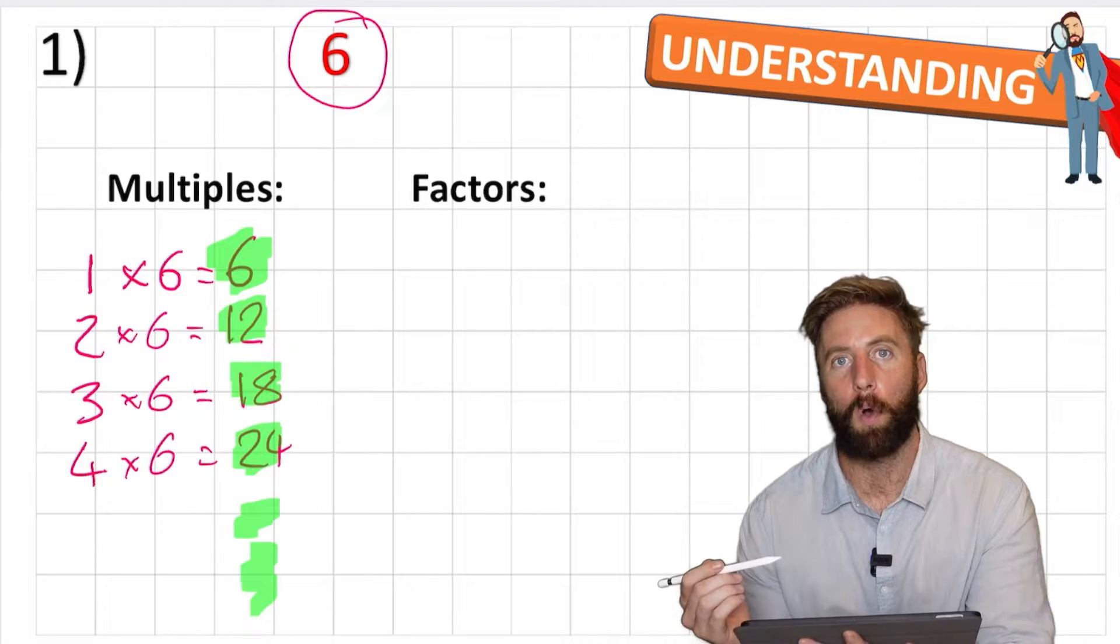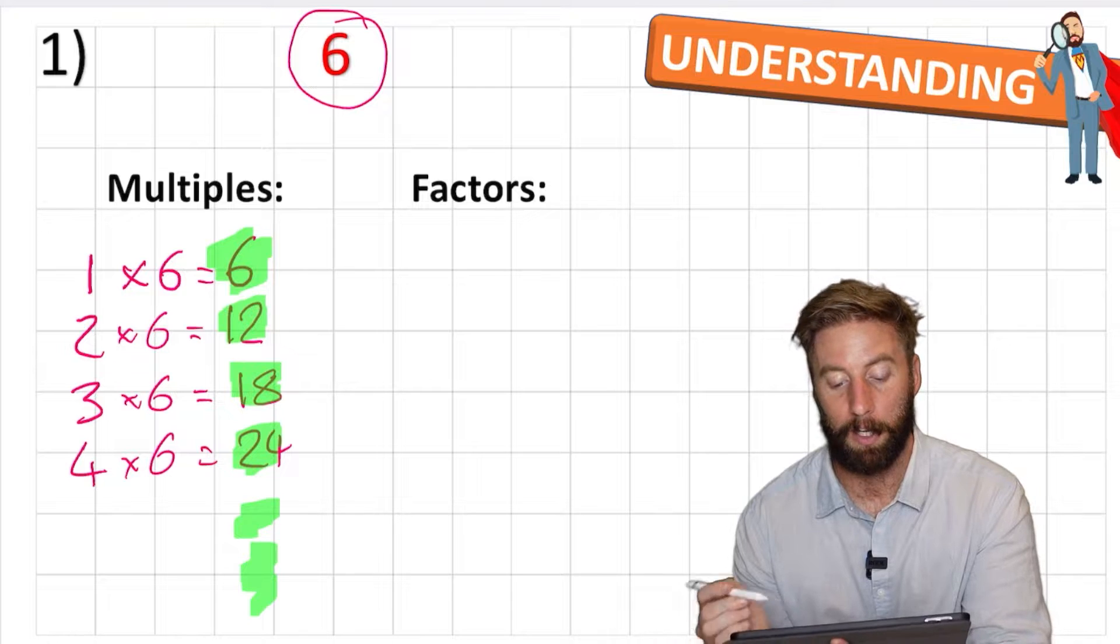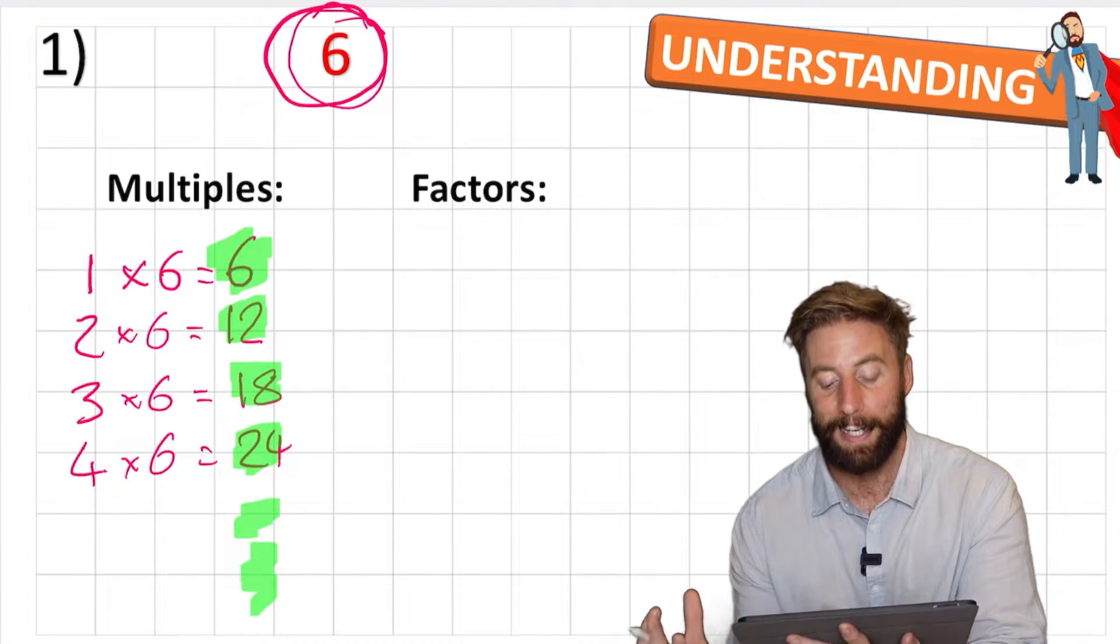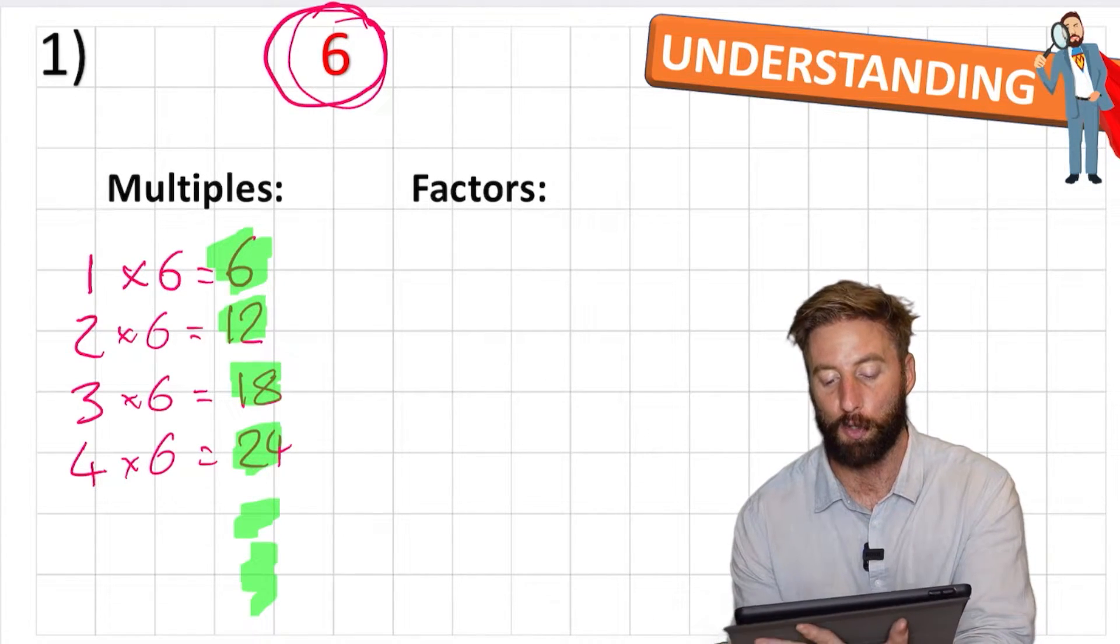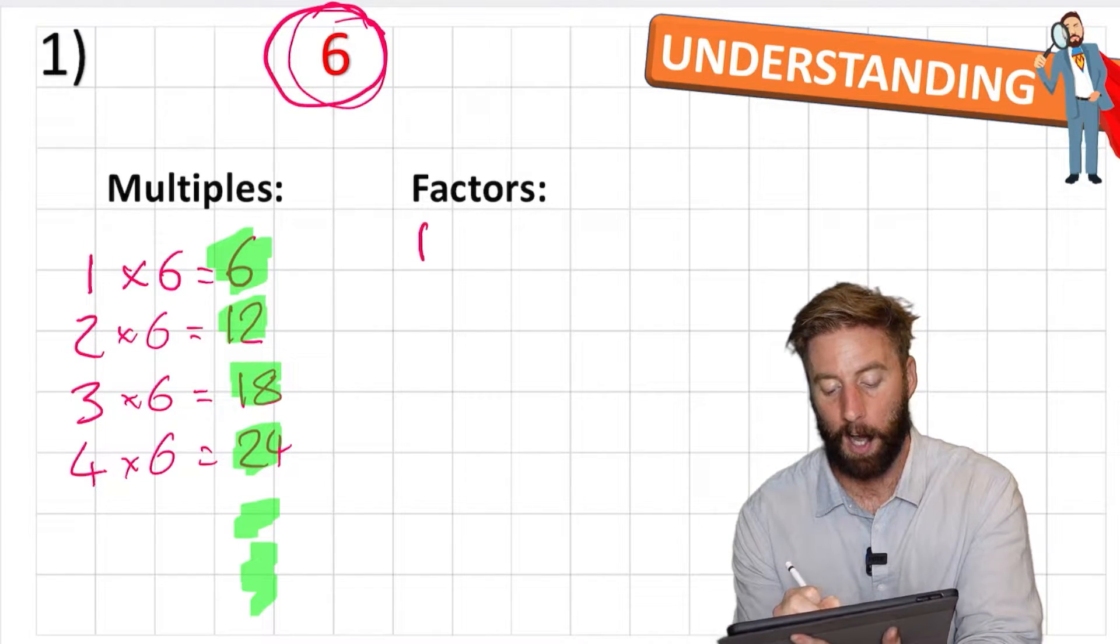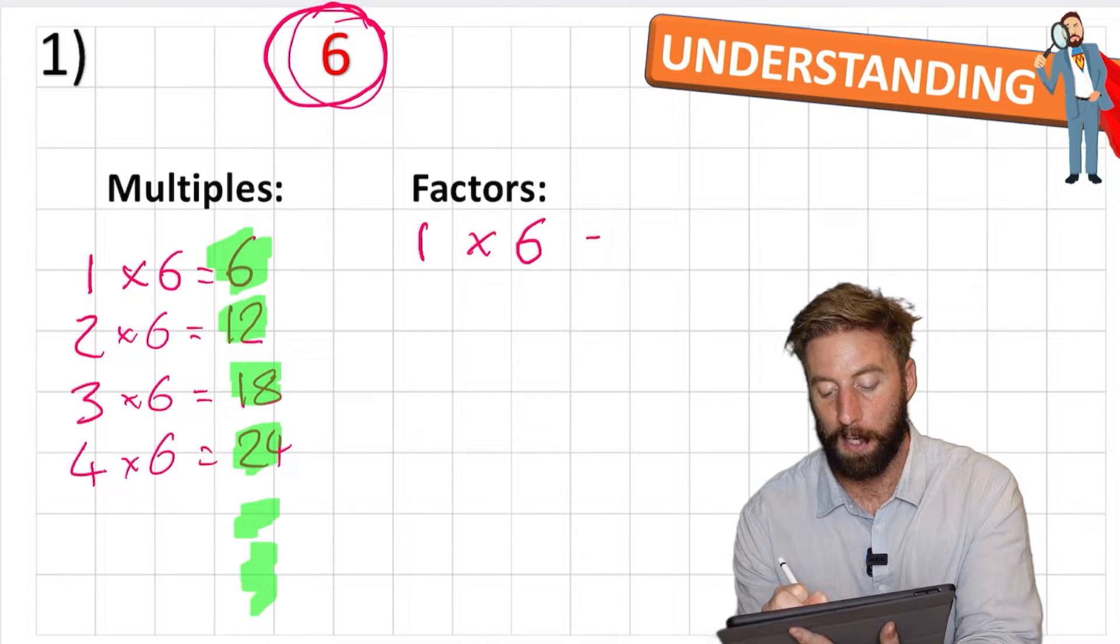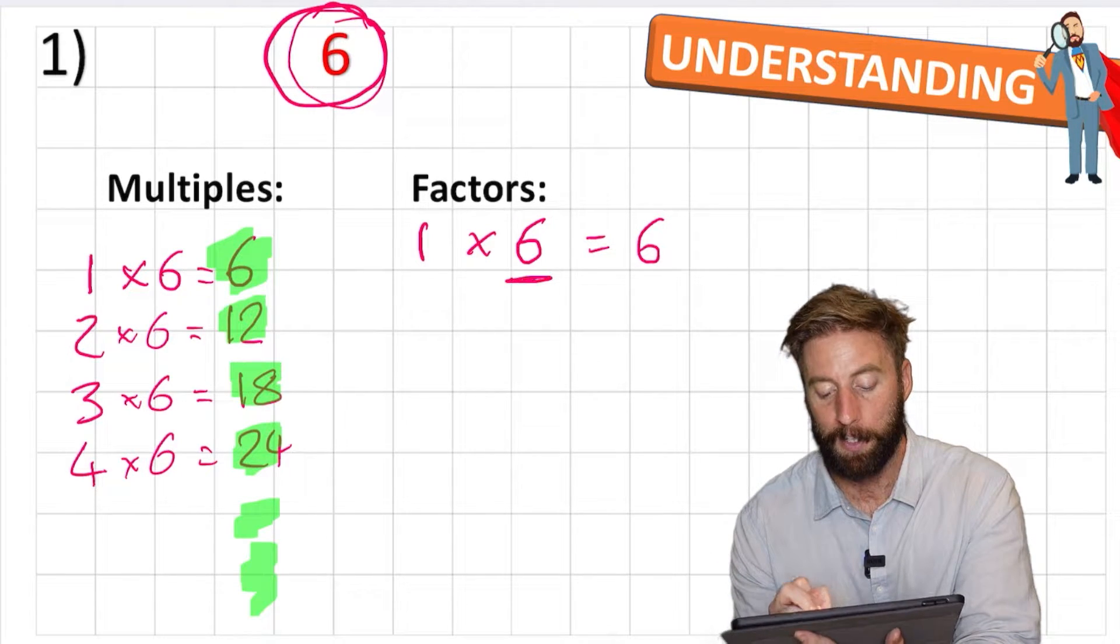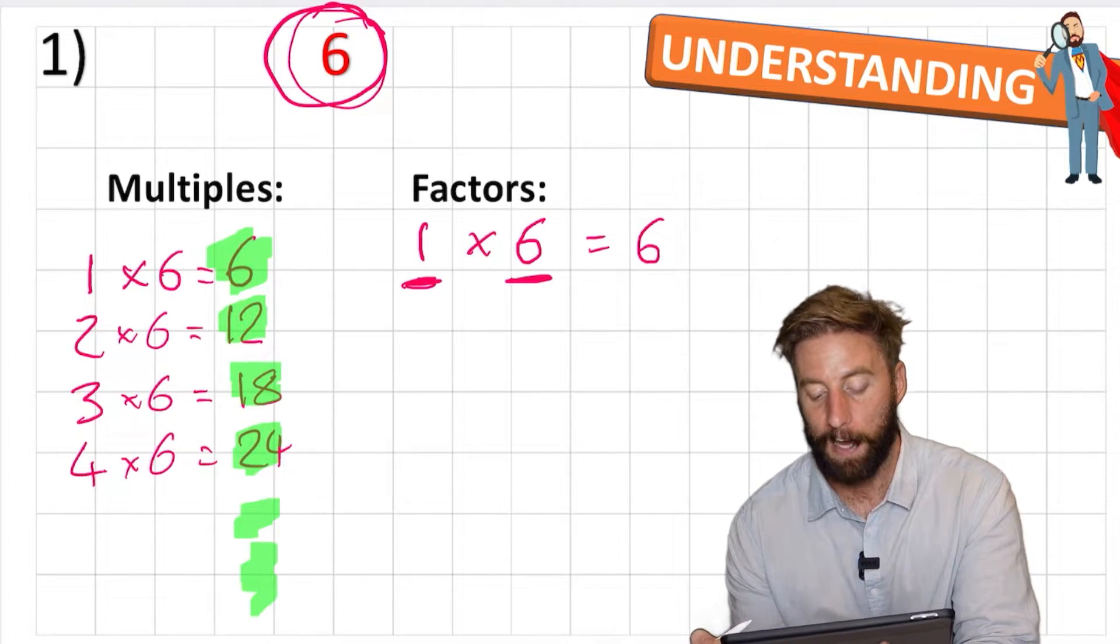So what are factors? Well factors are pairs of numbers that equal our target number. So again in this case we're looking at 6. Our product wants to be 6, so we need two integers that are going to equal 6. And again there's a bit of a logical sequence to this because we can always have 1 times the number itself, which in this case is 6. 1 times 6 will be 6. So therefore we can always have the number itself multiplied by 1. They're always going to be our first factors.